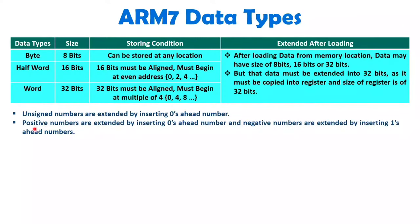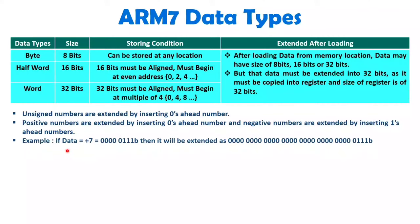But if your number is a signed number, then you will have to see whether the number is positive or negative. For a positive number, you extend by inserting zeros ahead of the number. By example you will get to know how it is happening. Let's say I have data which is positive and that is plus seven. In binary, seven is 1-1-1, but here all zeros are extended ahead. So for positive number, when you want to extend it, you just insert zeros to make it 32 bits, and then you can say plus seven is represented in terms of 32 bits.